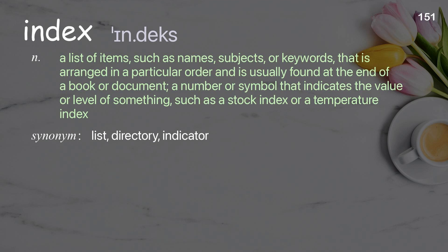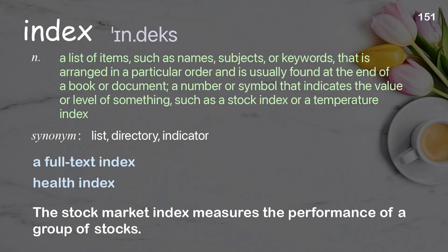Index: a list of items, such as names, subjects, or keywords, arranged in a particular order, usually found at the end of a book or document; a number or symbol that indicates the value or level of something, such as a stock index or a temperature index. Examples: a full-text index, health index. The stock market index measures the performance of a group of stocks.